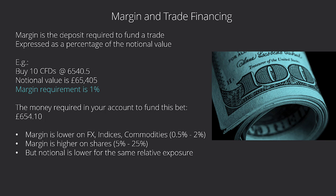Let's look at it again. So 10 CFDs, and we're buying those at 6540.5 — this could be the Footsie or anything in particular. The notional value of that is £65,405. We're in pounds because it's the Footsie; if it was the DAX we'd be in euros, and the Dow would be in dollars. The Footsie is 6540 pounds 50p, multiplied by 10, giving us the notional value of that position.